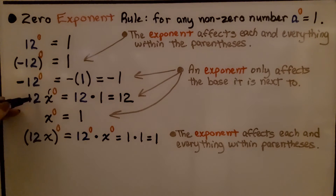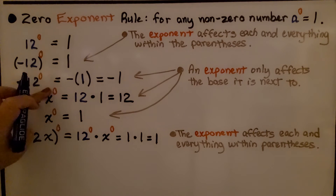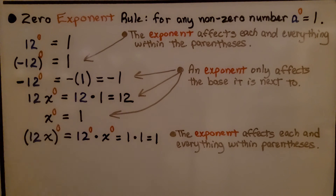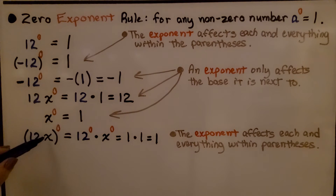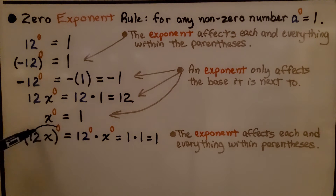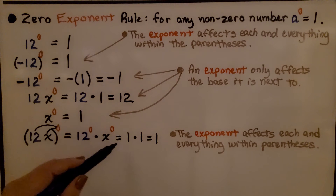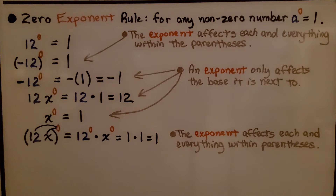Here we have 12x raised to the zero power. This zero is only affecting x, not the 12 — it only affects the base it is next to. That means we have 12 times one, which equals 12. And x raised to the zero power equals one. Here we have 12x within parentheses raised to the zero power, so the zero affects everything inside: 12 to the zero times x to the zero is one times one, which equals one.